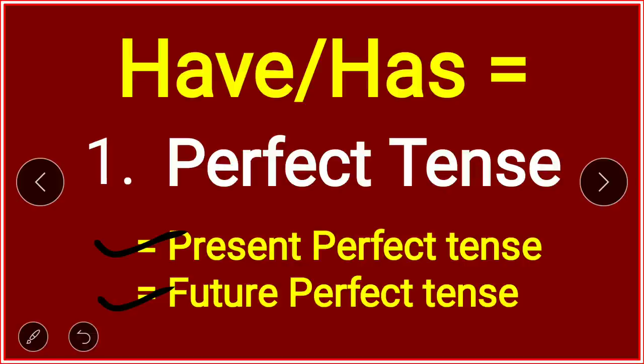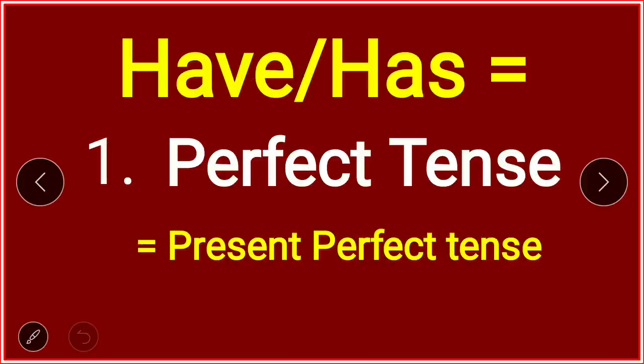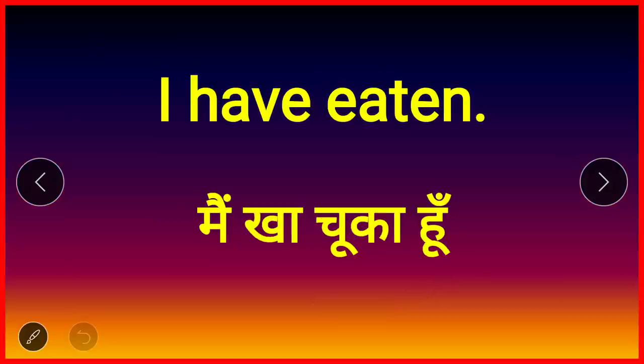Remember: past perfect tense — kabhi bhi have or has ka prayog nahi karenge. With past (bhoot kaal), never use have or has. So: present perfect and future perfect — let's look at present perfect tense first.